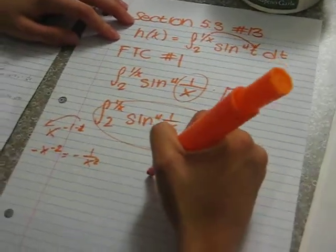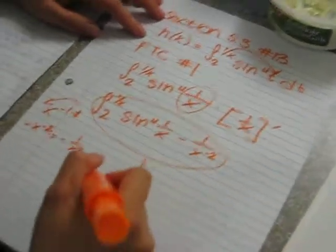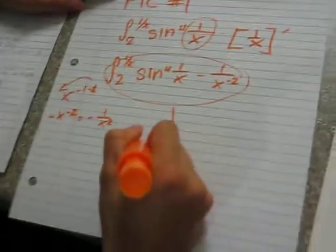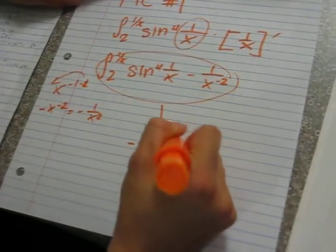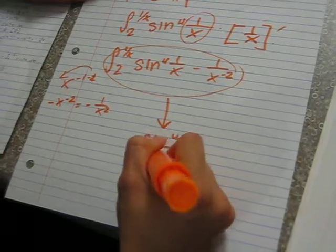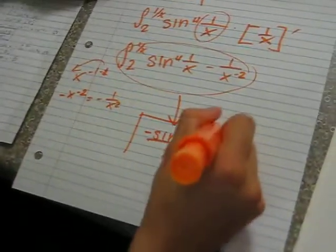Alright, so with all of this, once you take the derivative, you're going to get negative sine(4 times 1/x) over x^2. And this is your answer. Yay!